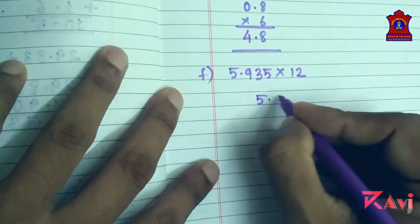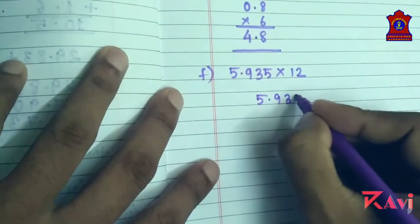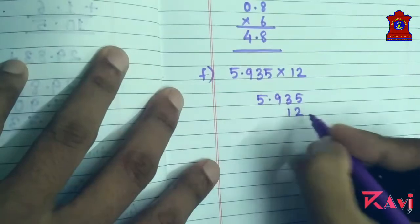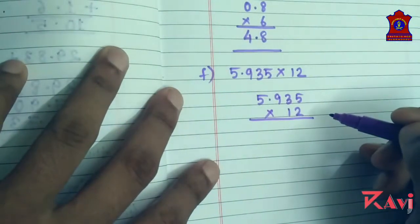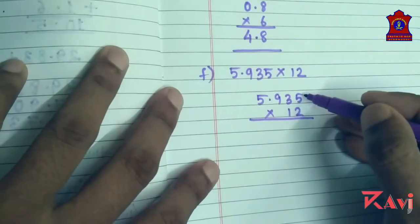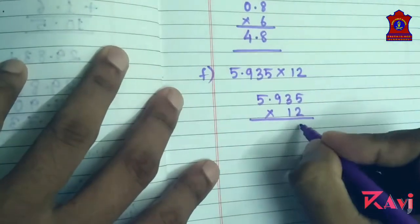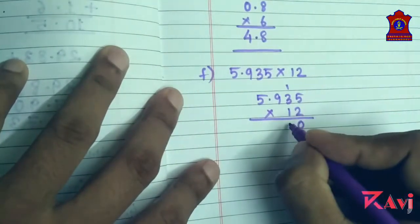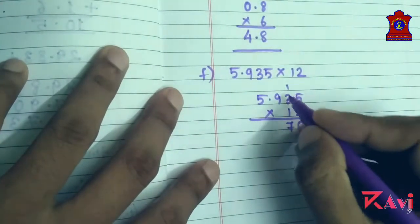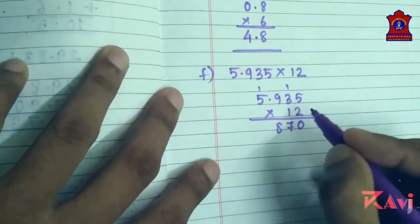You know the basic method how to multiply. Two fives are ten, one goes here. Two threes are six and one seven. Two nines are eighteen, eight, one goes here. Two fives are ten and one eleven.